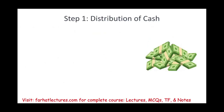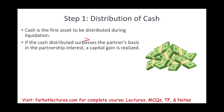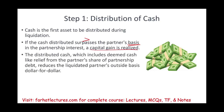Let's take a look at a normal distribution with a gain. First, we distribute the cash — cash is the first asset to be distributed during liquidation. If the cash distributed is greater than the basis, then we have a gain, and we already know this from the current or non-liquidating distribution. The distribution of cash includes deemed cash — like relief from the partner's share of partnership debt.